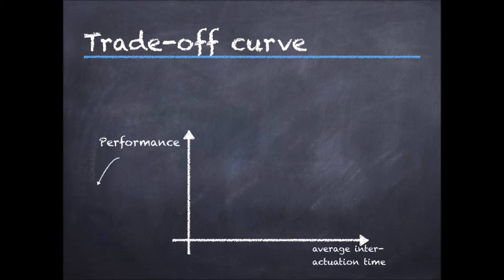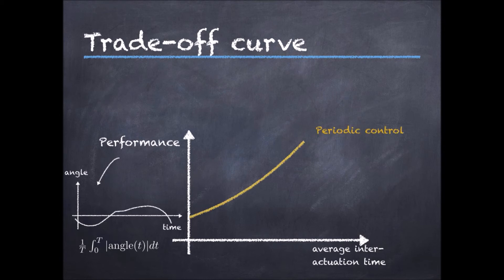For example, on the inverted pendulum just described, one can consider the average absolute angle error from the upright position. If we plot this curve for periodic control, we would expect, and this is typically the case, an increasing function, meaning that the larger the interaction time, that is the fewer number of times the loop is closed, the poorer the performance.